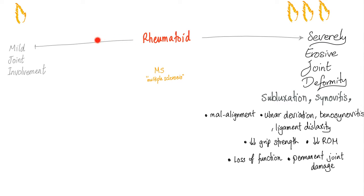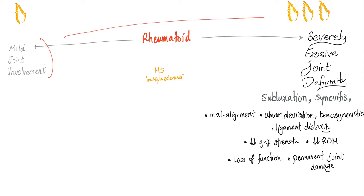Not all cases of rheumatoid arthritis are the same. Rheumatoid arthritis exists on a continuum. Some patients will have just mild joint involvement. Other patients will have severe erosive joint deformity with subluxation, synovitis, malalignment, ulnar deviation, tenosynovitis, ligament laxity, decreased grip strength, decreased range of motion, loss of function, and permanent joint damage. Some patients will start mild and progress to severe — it exists on a continuum.